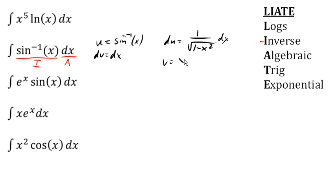And v will be just x. So then in our integral, we have u times v, minus the integral of v times du.